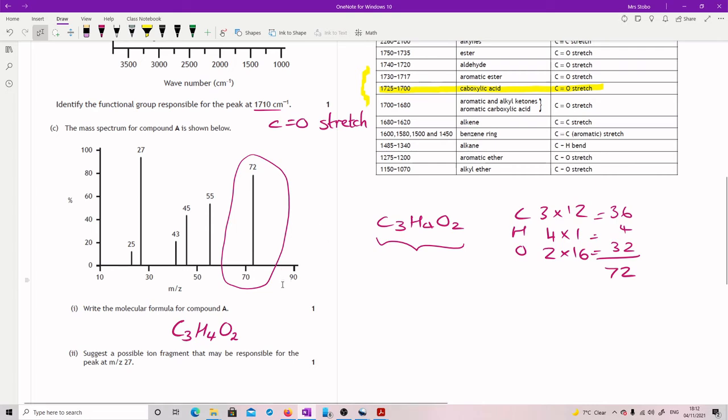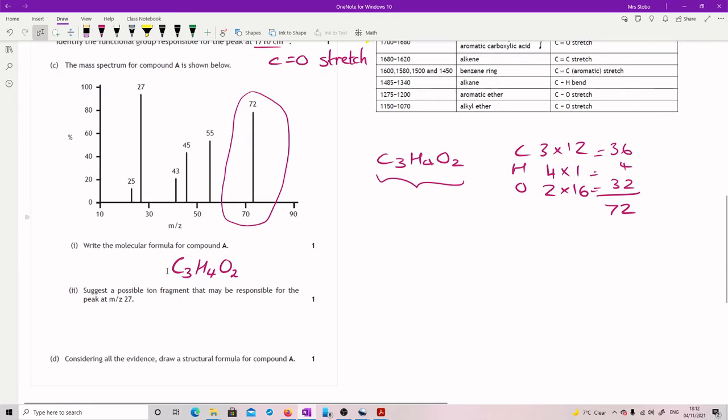Suggest a possible ion fragment that might be responsible for the peak at MZ 27. So you're only ever given one possible positive charge on this. So you're going to make it the charge for a start. Make sure it's an ion. So you're going to have to put a charge. We're looking for something that is 27. We're working with these elements here. So let's see what we can get.